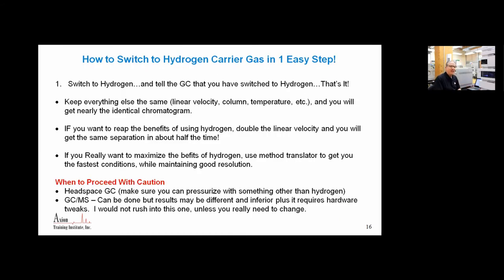Here's my how to switch from helium to hydrogen in one simple step. My statement is make the switch. Simply switch the gas from helium to hydrogen. When you make that switch, tell the GC that you made the switch. A modern GC uses that information to calculate pressures and flows. It must know what your carrier gas is. It uses that viscosity to know what pressure to apply in order to get the correct flows. What you'll notice about hydrogen, one of the many advantages is that it has much lower viscosity than helium, which means we can operate at lower pressures and still get higher linear velocity.